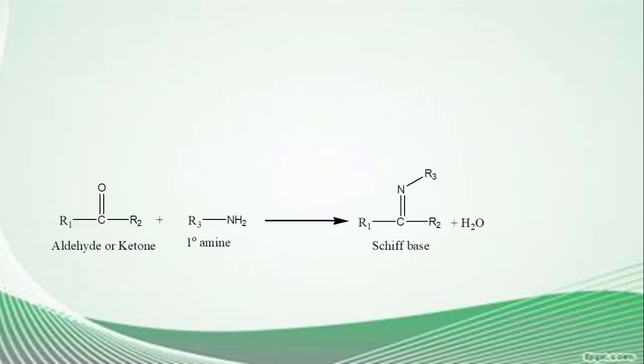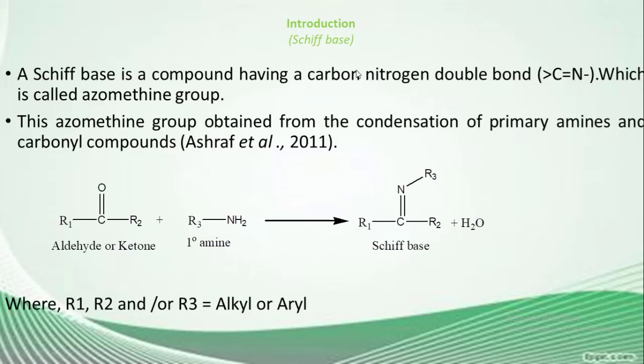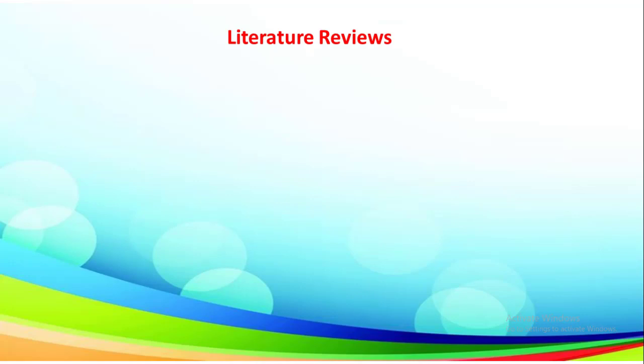Here the preparation of Schiff base is represented by equation. Aldehyde or ketone reacts with primary amine and produces Schiff base plus water. A Schiff base is a compound having a carbon-nitrogen double bond, which is called azomethine group. This azomethine group obtained from the condensation of primary amines and carbonyl compounds (Ashraf et al., 2011). Here R1, R2, or R3 are alkyl or aryl groups.